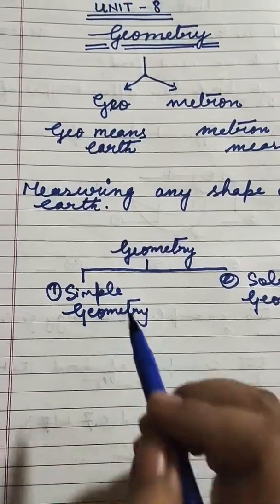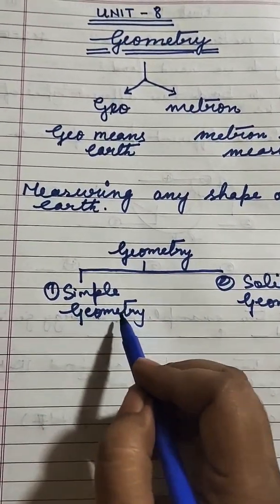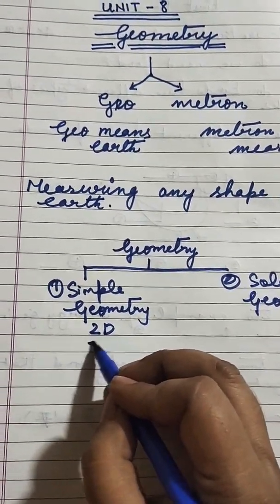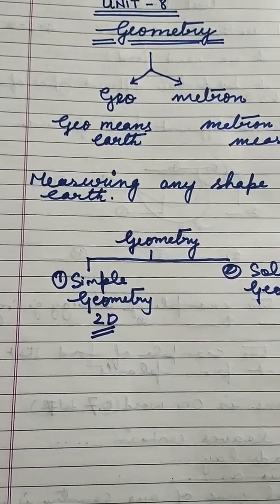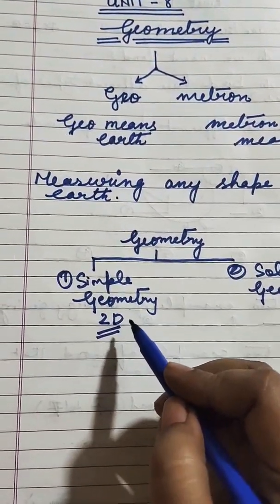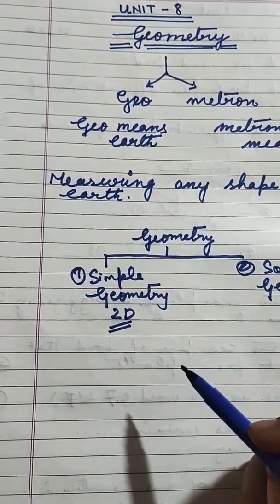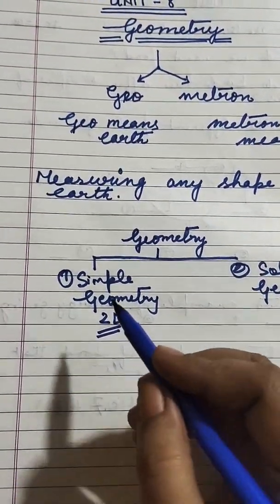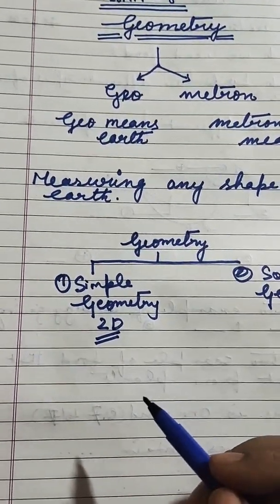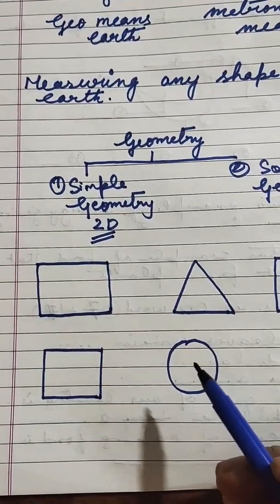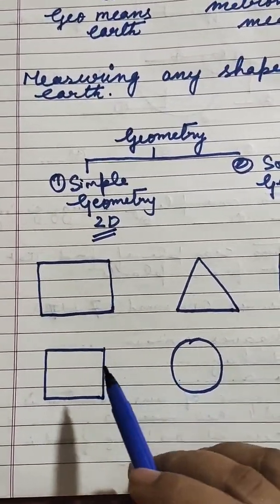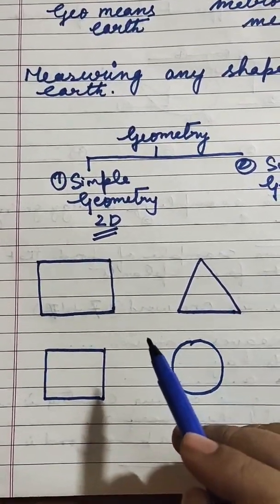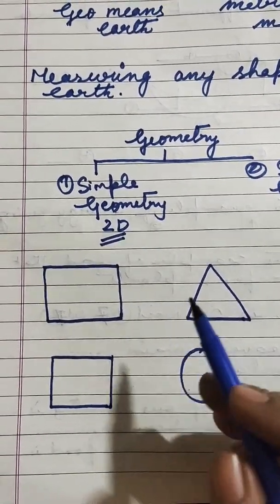What is simple geometry? Simple geometry means 2D shapes — it means these shapes have only two dimensions. Let's understand with some examples. Here you can see some shapes: Rectangle, Triangle, Square and Circle. These are simple geometry 2D shapes.